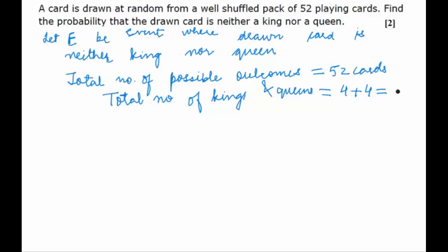We don't want these 8 cards. Therefore the total number of favourable outcomes would be 52 excluding these eight. So 52 minus 8 that is 44.